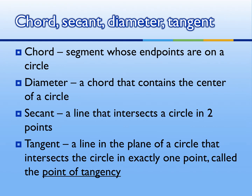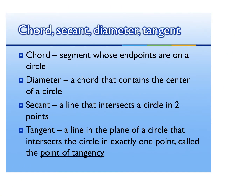Next, we have a chord. A chord is a segment whose endpoints are on a circle. A diameter is a chord that contains the center of a circle, so a diameter is just a special chord. A chord just goes from edge to edge, but when that chord is a diameter, it needs to go through the center point. The black line is a diameter, but the blue is just a chord — they're both chords, technically, but the more specific name for the one that goes through M would be a diameter.